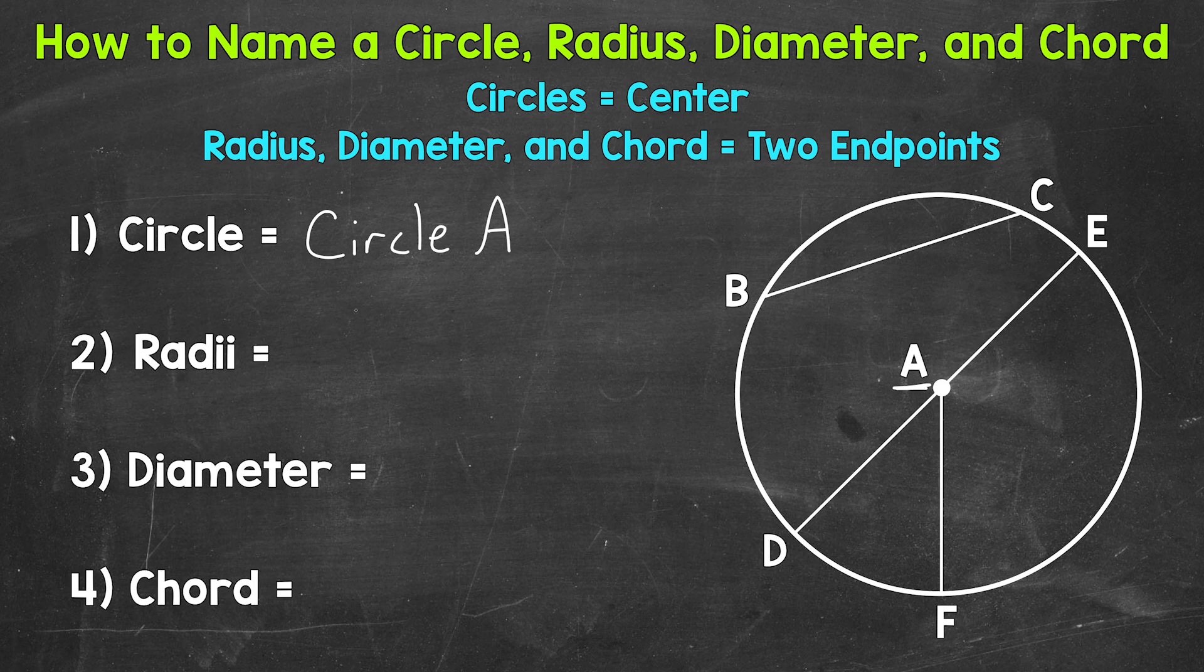For example, let's start in the center at point A and work our way to a point on the circle. Let's use point F. So A to F, right here, this would be an example of a radius. We take our two endpoints, A and F, and then put the line segment symbol above those two letters. So line segment AF is an example of a radius.